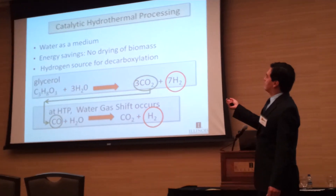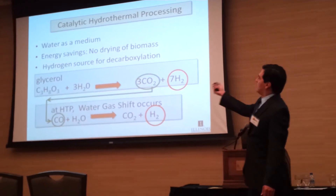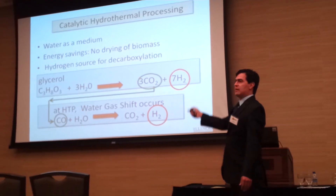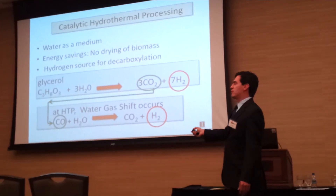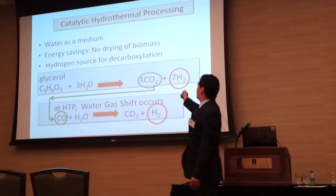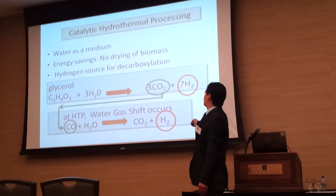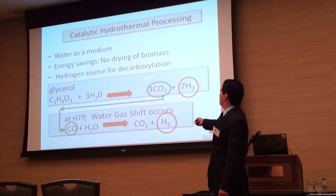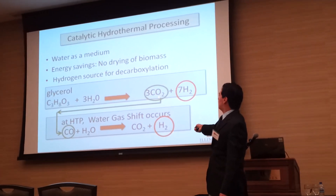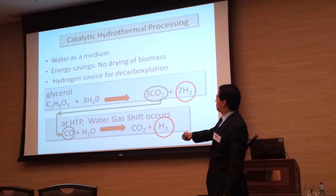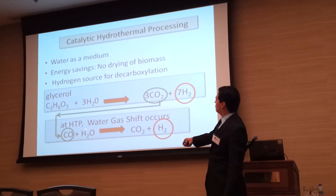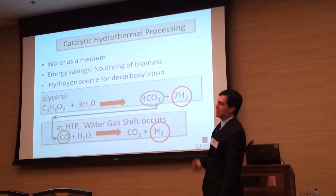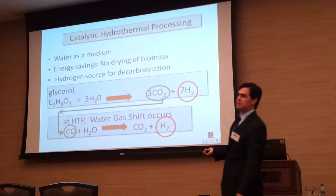You can use the glycerol found in the bio-crude as a source of hydrogen. From the glycerol, you have carbon dioxide which you can then use with water to produce an additional hydrogen supply.